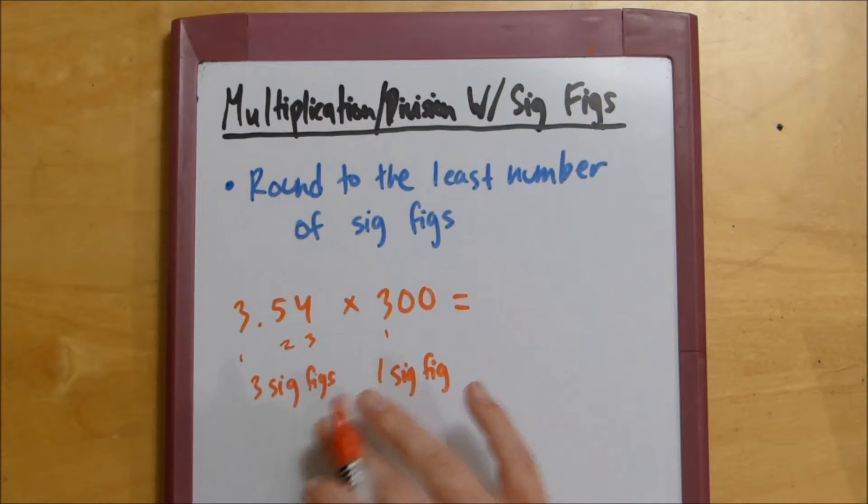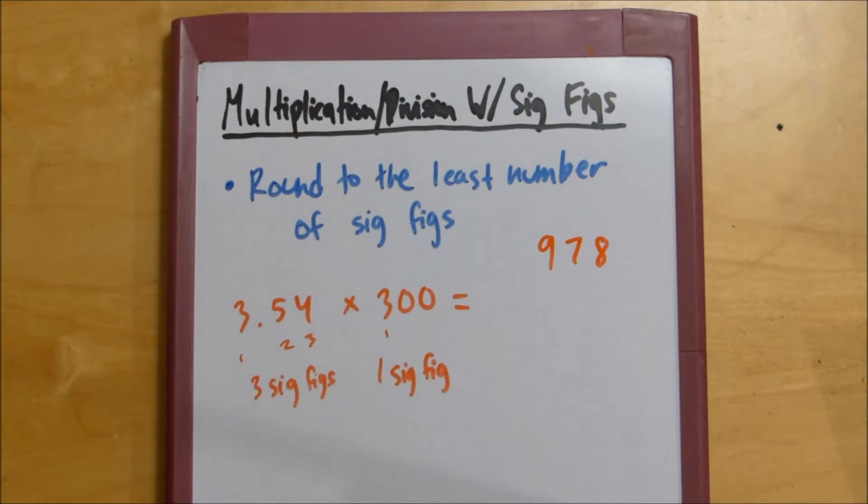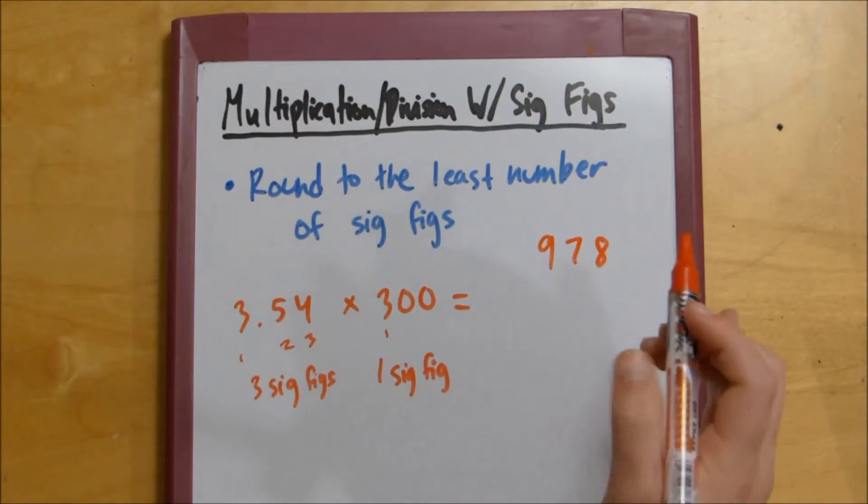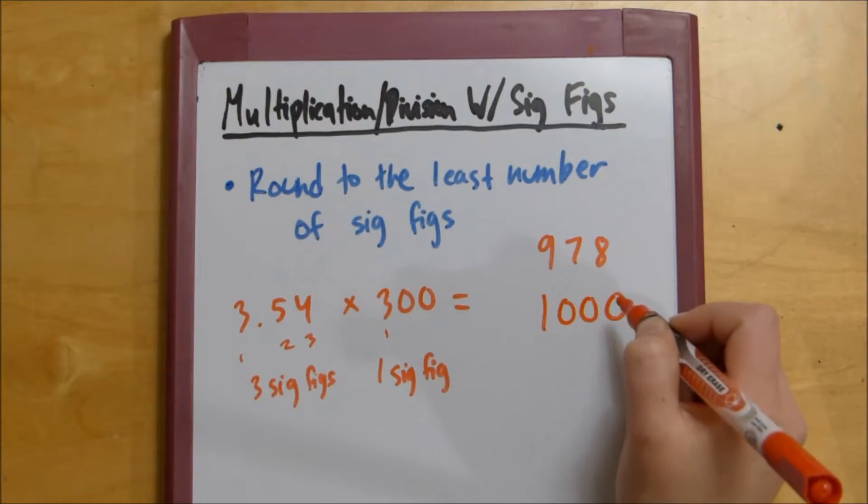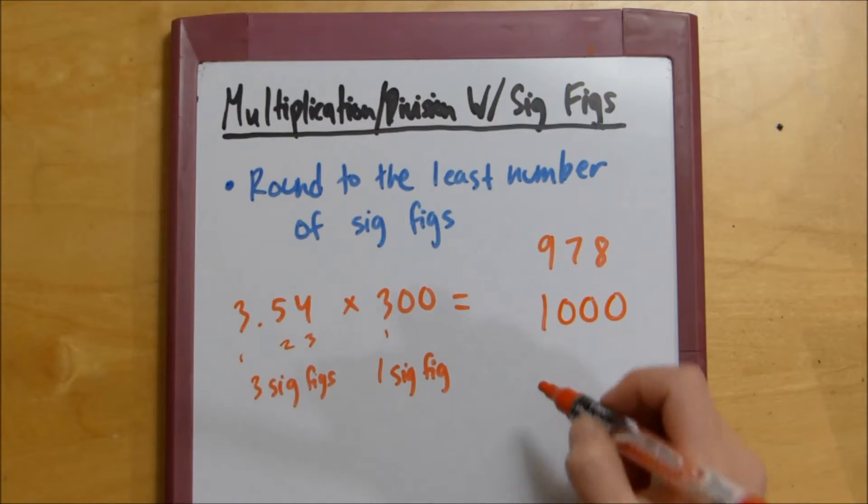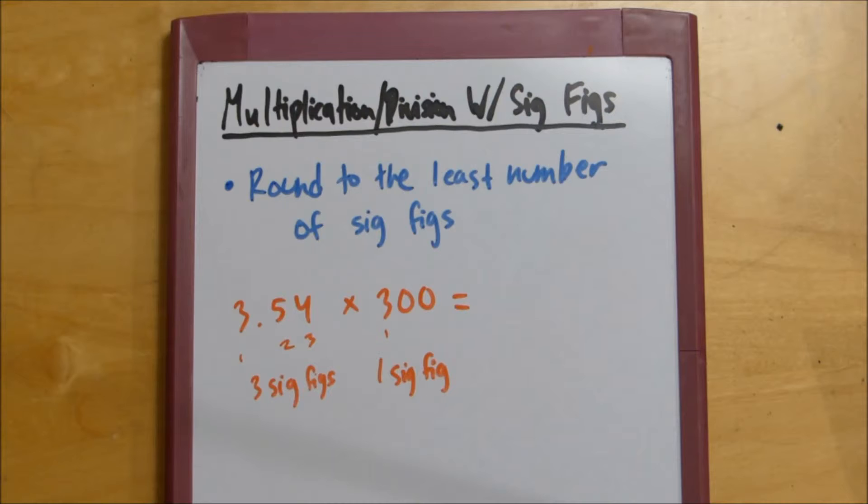So let's say the answer was something like 978. To end up with 1 sig fig, you'd have to end up rounding to about 1,000, or you could round down to 900. It would make more sense to round up to 1,000, but it really depends on what your teacher wants. So now let's look at the answer to this problem.